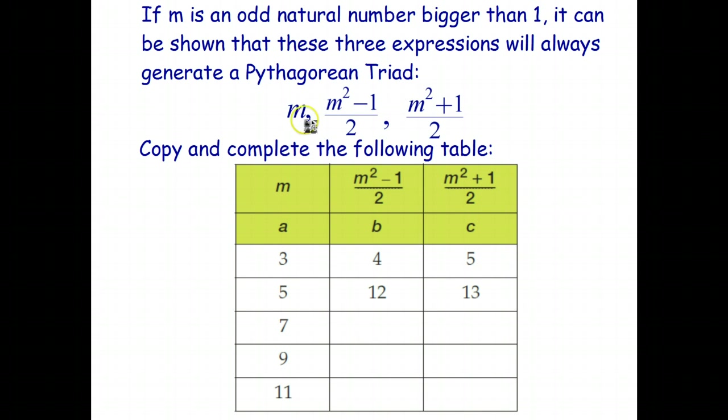So have a look at these three expressions just up here: m, m squared minus 1 all over 2, and m squared plus 1 all over 2. Now m is going to be the smallest number a, and m has to be a positive odd number. So 3 bigger than 1. So 3, 5, 7, 9, 11, and so on. And it turns out if you choose m to be any of these numbers, or any positive odd number, you'll generate a Pythagorean triad. So let's just double check that.